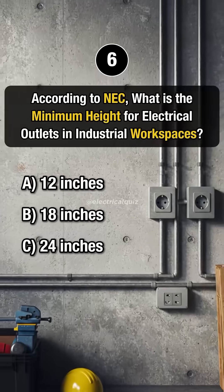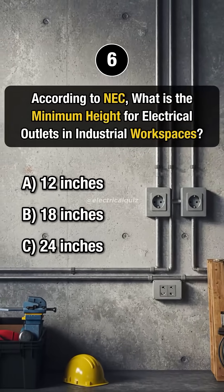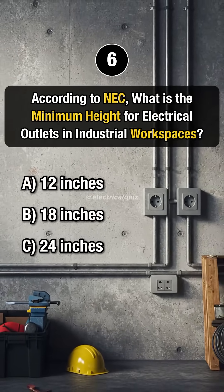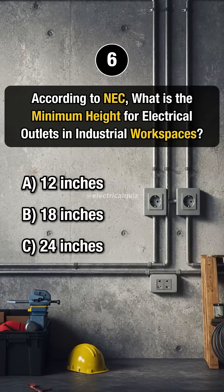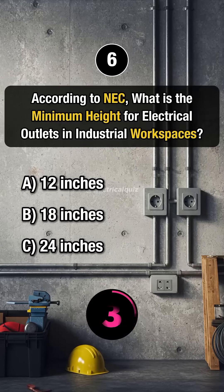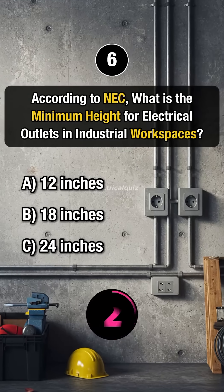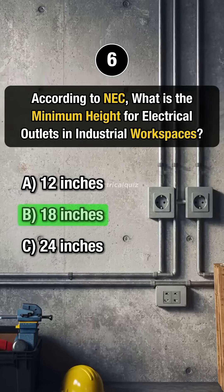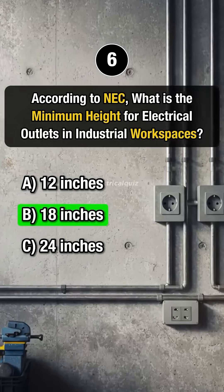Question 6. According to NEC, what is the minimum height for electrical outlets in industrial workspaces? Answer: B. 18 inches.